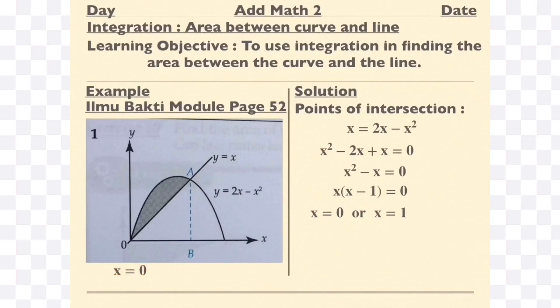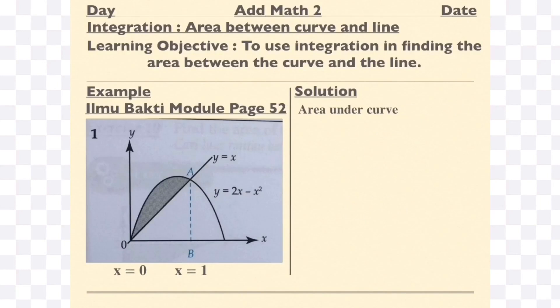Now, x equals 0 will be at the origin and x equals 1 will be the line passing through AB, or you can see that intersection at point A. Now you find the area under the curve. If you use integration to find the area under the curve, you'll get this area.